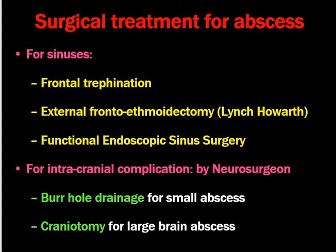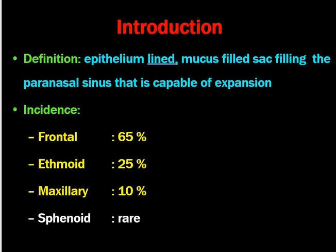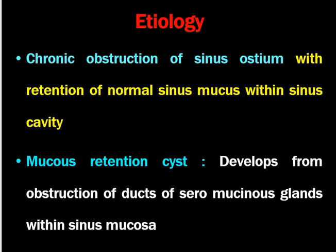For surgical treatment of intracranial complications, external frontal ethmoidectomy or FESS for the sinuses, and burr hole drainage for small abscesses or craniotomy for large brain abscesses by neurosurgeons. Mucocele of the paranasal sinuses is defined as an epithelium-lined, mucus-filled sac filling the paranasal sinus that is capable of expansion. The frontal sinus is most common, accounting for around 65% of all mucocele cases; 25% occur in the maxillary sinus. Frontoethmoid mucocele is also a common entity. It results from chronic obstruction of the sinus ostium with retention of mucus, or from a mucus retention cyst due to obstruction of ducts of seromucous glands.